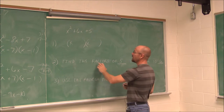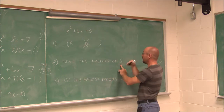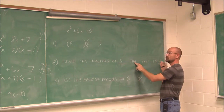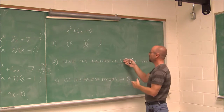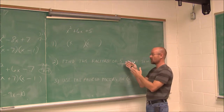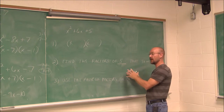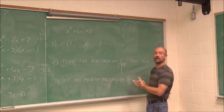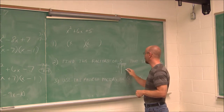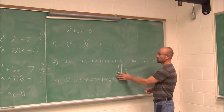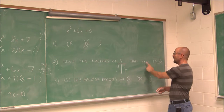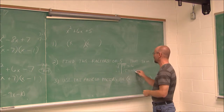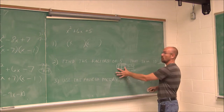Step two: find the factors of the last value — the c value. In this case it's 5. Find those factors that sum to 6. Listing all factors: 1 and 5, or negative 1 and negative 5. Which one sums to 6? 1 plus 5 equals 6. Negative 1 plus negative 5 equals negative 6. So 1 and 5 are the ones we want.